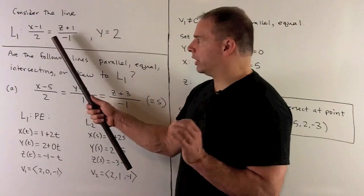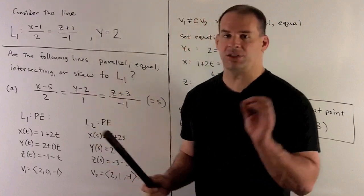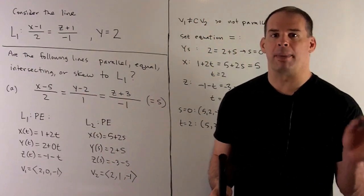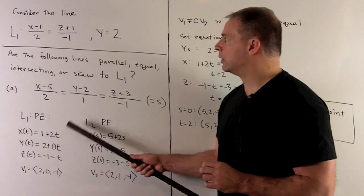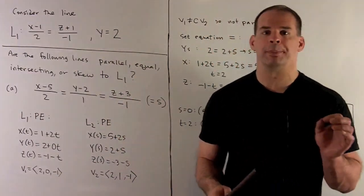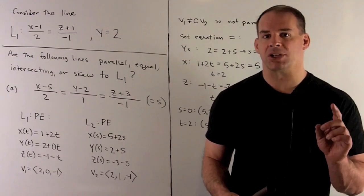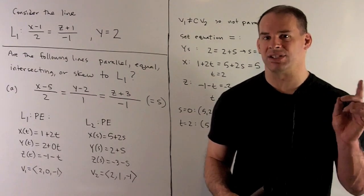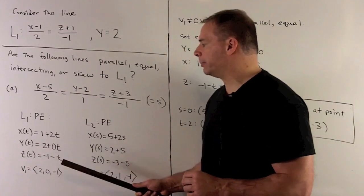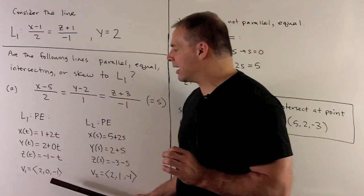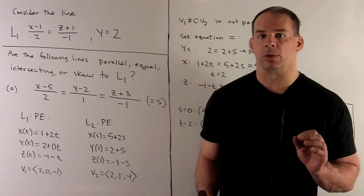Setting (x minus 1) over 2 equal to t gives x equals 1 plus 2t. For (z plus 1) over minus 1 equal to t, moving the minus 1 over gives minus t, and moving the 1 over gives z equals minus 1 minus t. Then y equals 2 plus 0t. So the direction of L1 is given by v1 = (2, 0, -1).